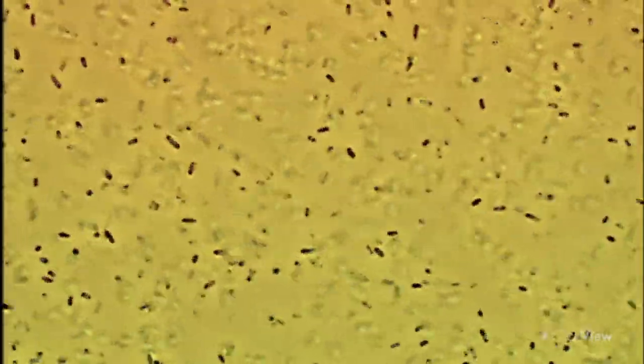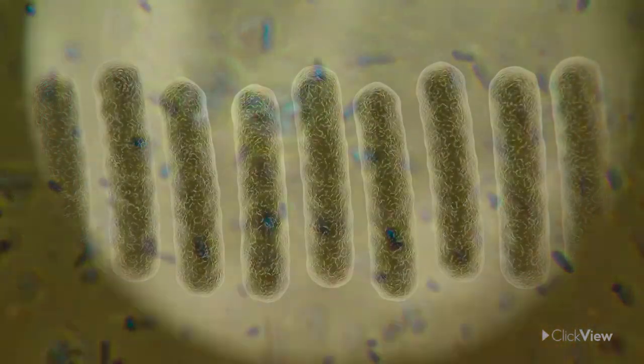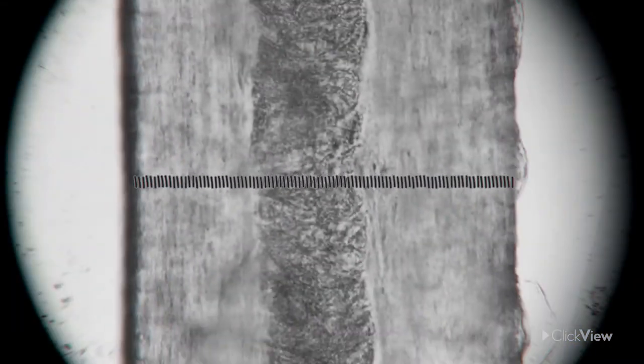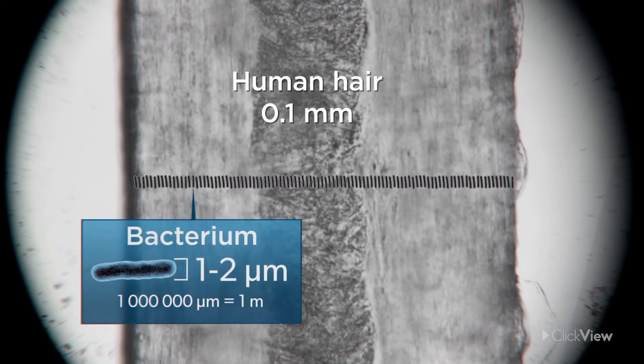Most bacterial cells barely measure a micrometre or two, meaning you'd need a powerful microscope to see them. A hundred bacteria could easily line up across the diameter of just one hair.